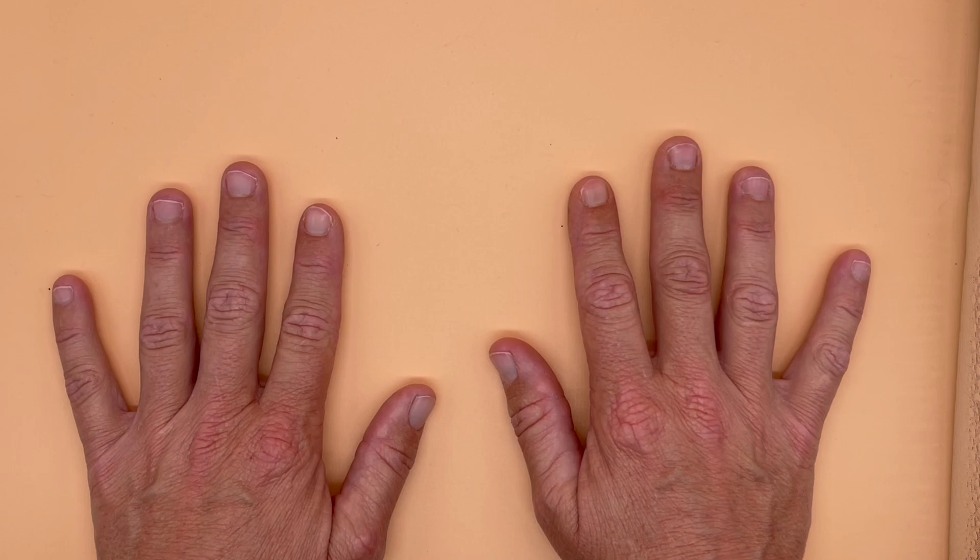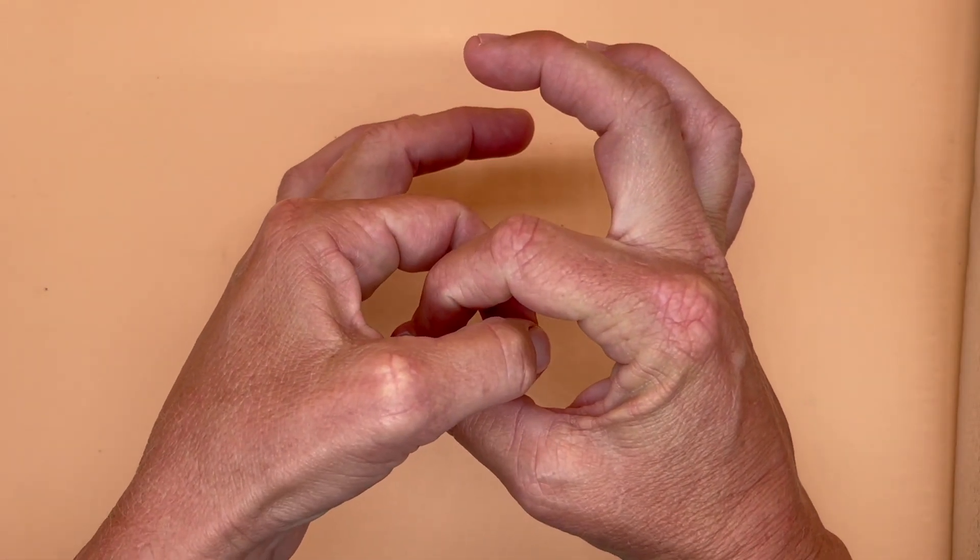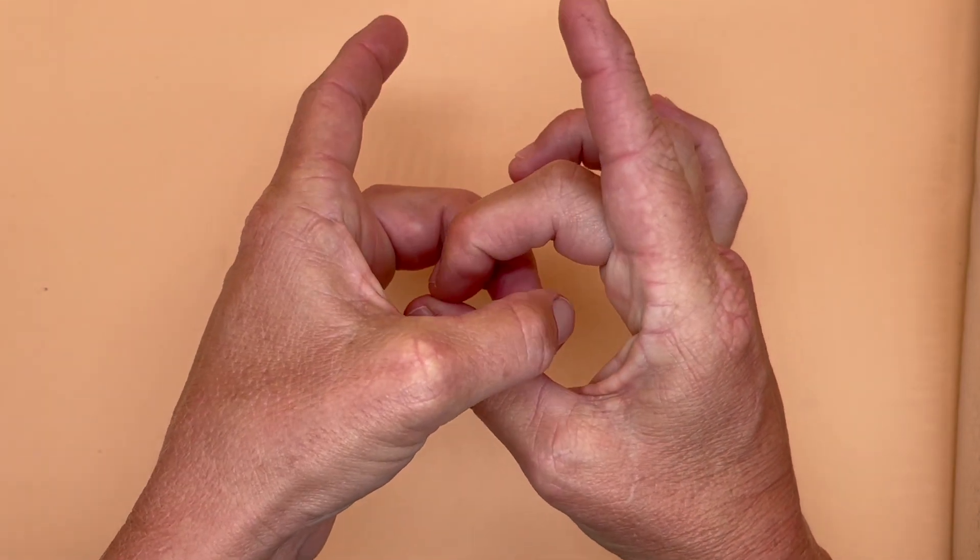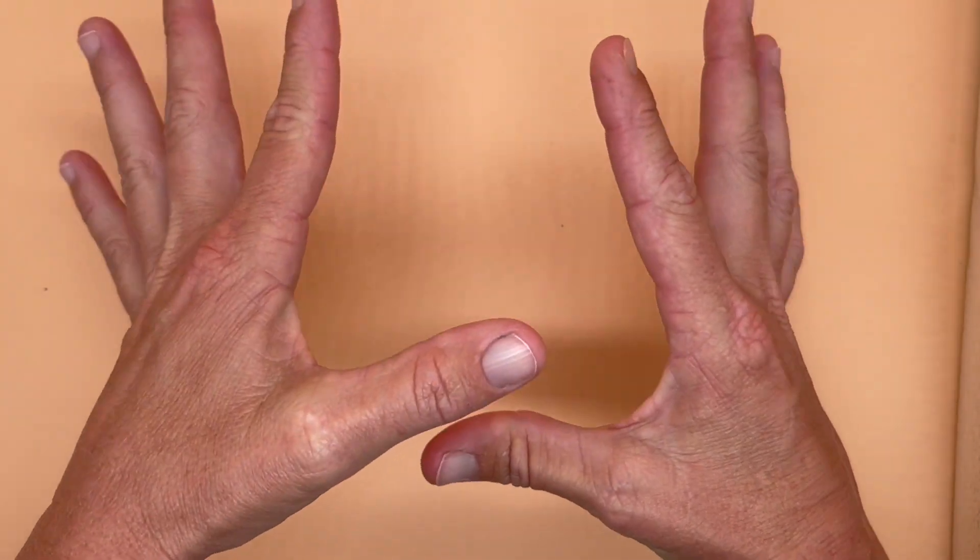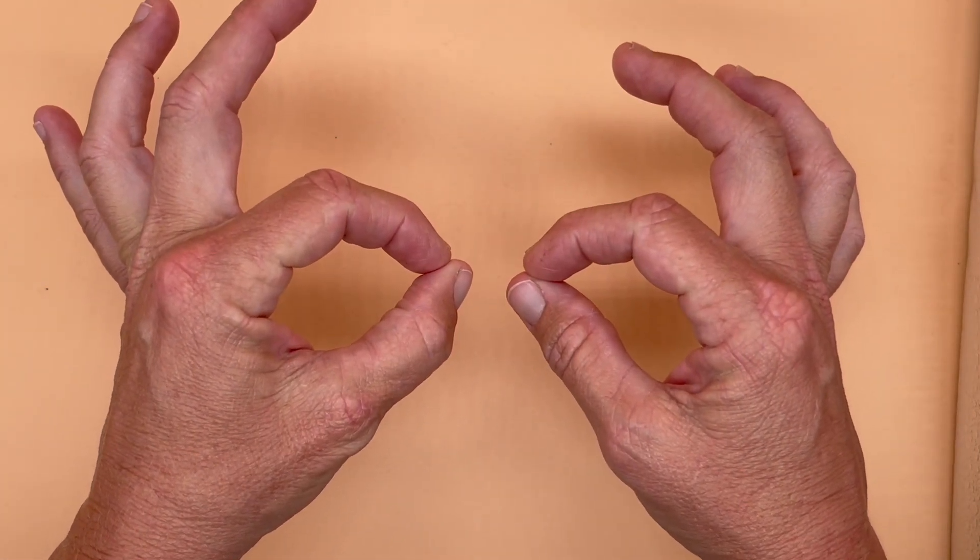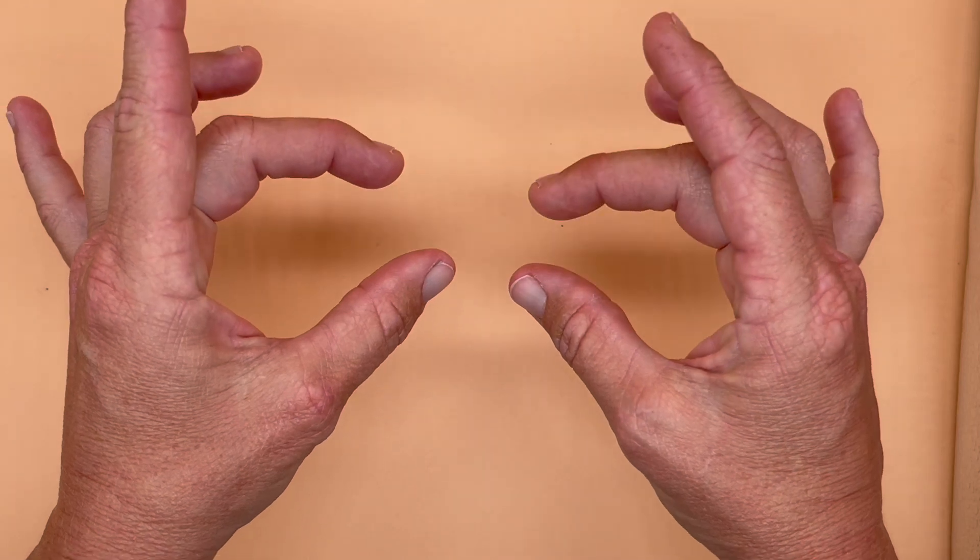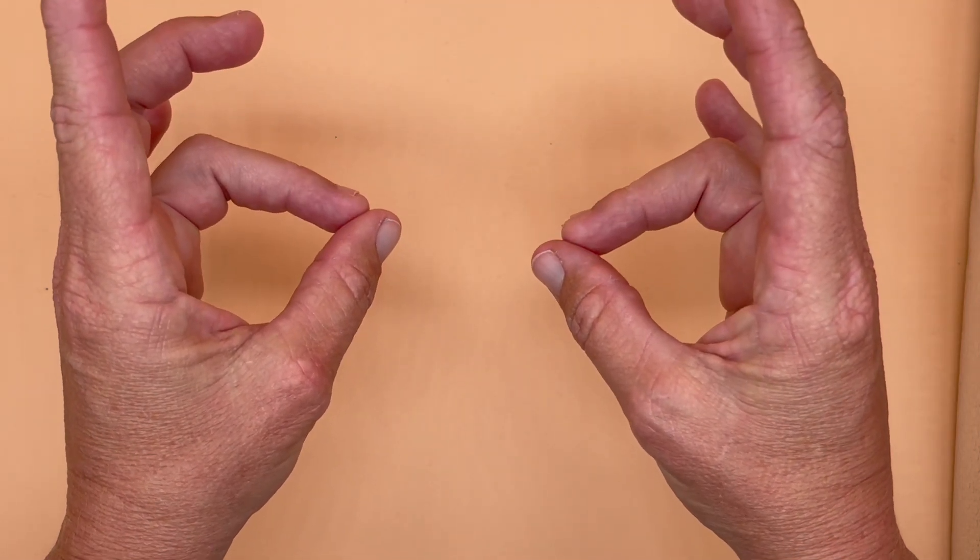It's called Golden Rings, and we're going to make interlocking golden rings with our fingers. As we play the game, we're going to start by putting our pointer and thumb together. Then we'll do middle finger and thumb, ring finger and thumb,